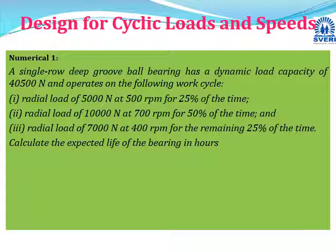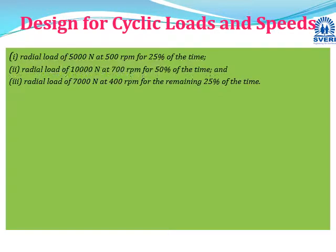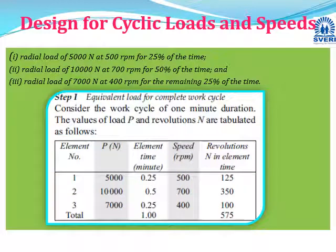Numerical problem one: A single row deep groove ball bearing has a dynamic load capacity of 40,500 N and operates on the following work cycle with three elements — radial load of 5000 N at 500 rpm for 25% of time; radial load of 10,000 N at 700 rpm for 50% of time; and radial load of 7000 N at 400 rpm for remaining 25% of time. Calculate the expected life of the bearing in hours. Given: dynamic load carrying capacity C = 40,500 N.